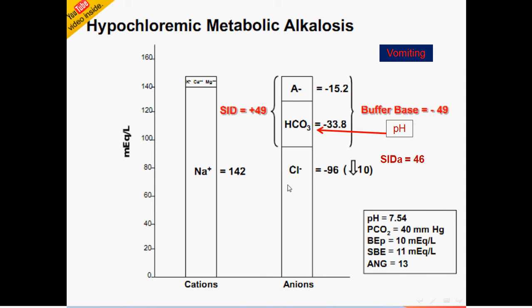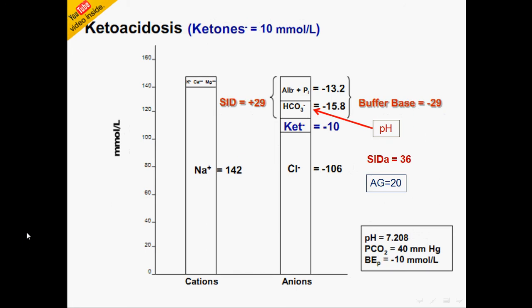This is electroneutrality with a normal anion gap. In a patient with DKA, keto acids are added, which neutralize part of the bicarbonate. There is no change in sodium and no change in chloride, so the strong ion difference remains the same. But the buffer base decreases due to neutralization by keto acids, and the pH is acidotic. The strong ion difference gives no clue here, but the buffer base does. The anion gap — the sum of sodium minus chloride minus bicarbonate — decreases below 130, indicating a high anion gap metabolic acidosis.